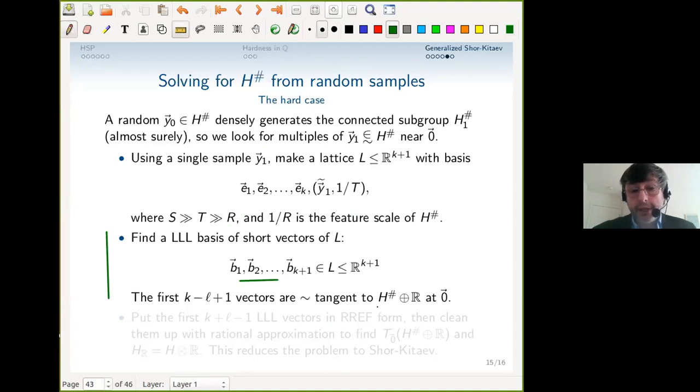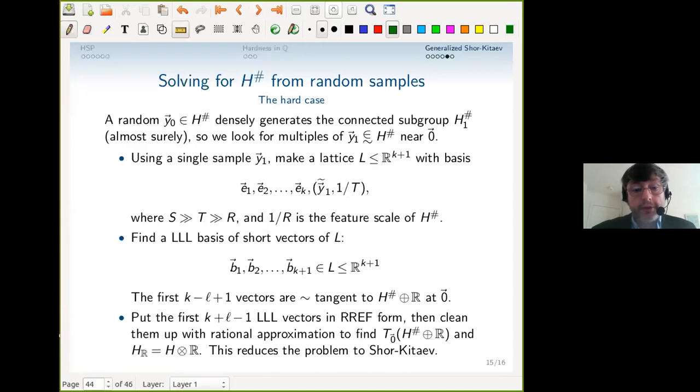The beginning of the basis are roughly tangent to H^♯ plus the extra dimension at zero. So you get vectors near zero, and they're approximately tangent. If you put these vectors that you find as a rectangular matrix in REF form, you can clean up what you found with rational approximation to find a tangent space. When you find that tangent space, you haven't found H exactly, but you found the direction that H points—or its dual—just the orthogonal complement. It's the same information, and this reduces the problem to Shor-Kitaev.